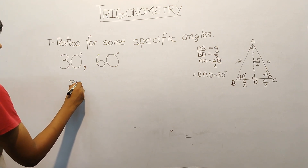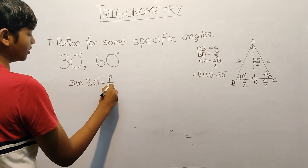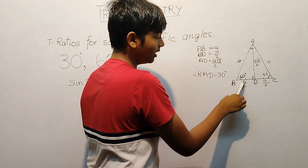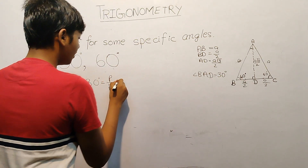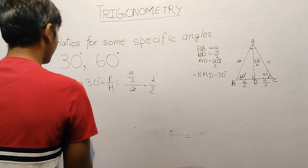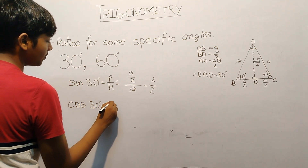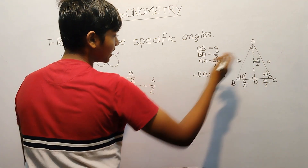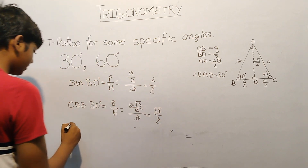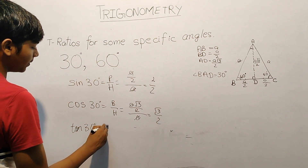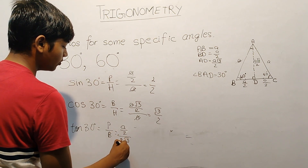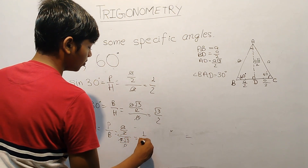Now we will calculate all the trigonometric ratios for 30 degrees. Sin 30 degree: sin is perpendicular by hypotenuse. The perpendicular opposite to this angle is BD, which is A by 2, and hypotenuse is A. So sin 30° = 1 by 2. Cos 30 degree is base by hypotenuse: the base AD is A root 3 by 2, divided by A. A and A cancel, giving root 3 by 2. Tan 30 degree is perpendicular by base: A by 2 divided by A root 3 by 2. A and A cancel, 2 and 2 cancel, giving 1 by root 3.